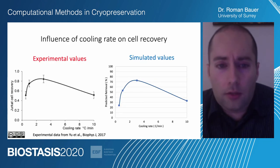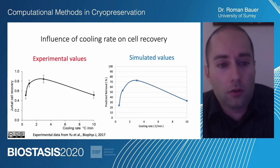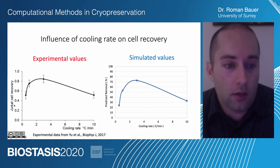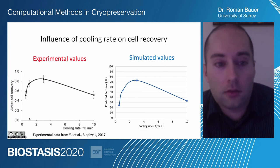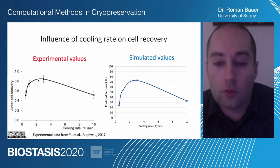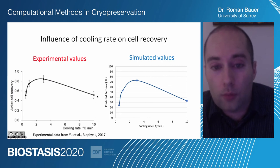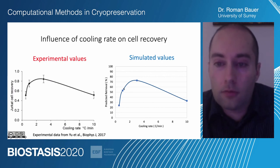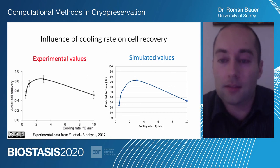We also looked into cooling rate optimization. It is known from experimental work that different cooling rates affect the quality of cells after cryopreservation. In this case, Jurkat cells show the best quality at a cooling rate of about 2.5 degrees Celsius per minute. We could essentially create this similar curve without having to do a lot of experimental work, which allows optimization of cooling rates computationally. This shows the value of using computational techniques to help people in practice optimize cryopreservation.